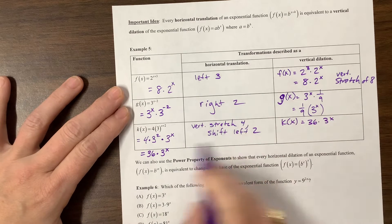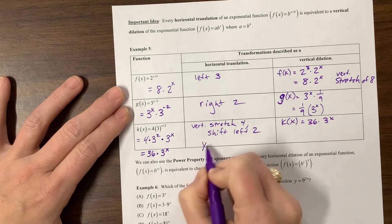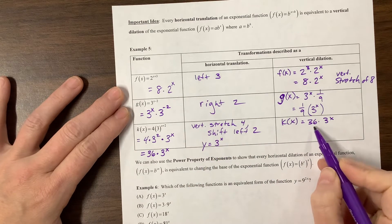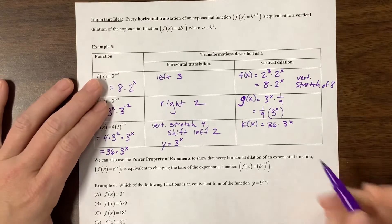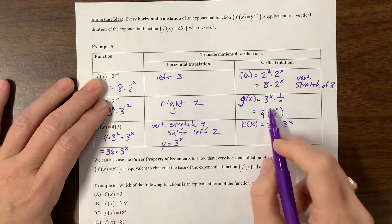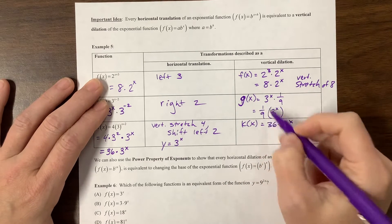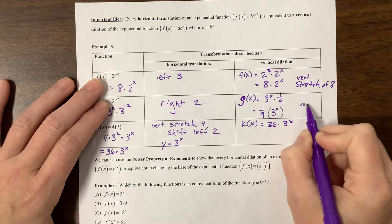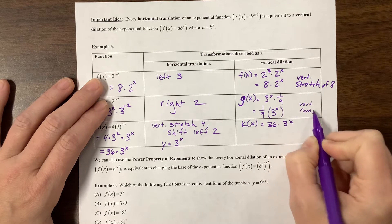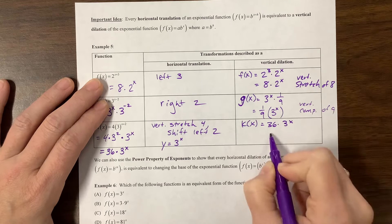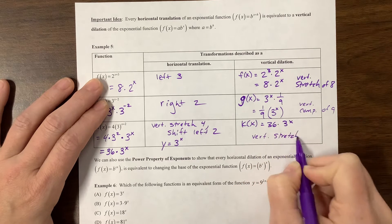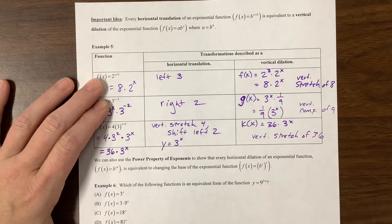But it also can be written, this k(x) could also be written as 36 times 3^x. That would take, so what I'm writing here is I'm assuming that my parent function is y is equal to 3^x. This one would be a vertical stretch of 36. Okay, so vertical stretch, oh, this was a vertical stretch of 1/9 or a vertical compression of 9. This is a vertical stretch of 36. Super.